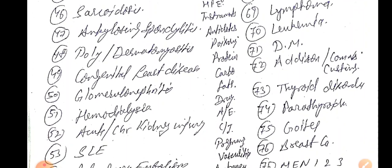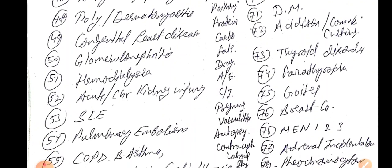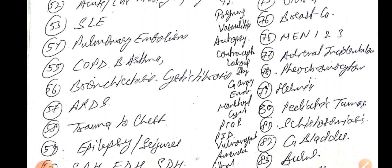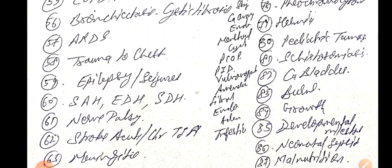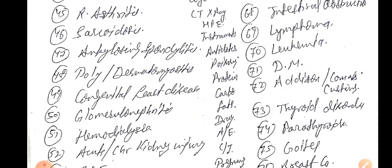Diabetes — gold standard investigation, drugs used with mechanism of action, type 1, type 2, and MODY — is high-yield. Addison's disease, Conn's syndrome, Cushing syndrome, thyroid disorders including hypothyroidism, hyperthyroidism, Graves' disease, thyrotoxicosis, parathyroid, goiter, breast cancer, MEN 1, MEN 2, MEN 3, adrenal incidentaloma, pheochromocytoma, hernias, pediatric tumors, schistosomiasis causing hemorrhagic cystitis and bladder cancer, burns, growth and development milestones, neonatal sepsis, and malnutrition are all very high-yield.